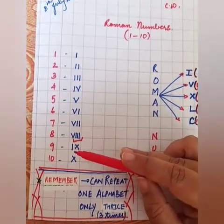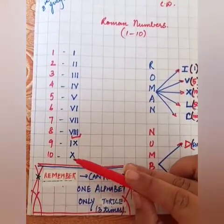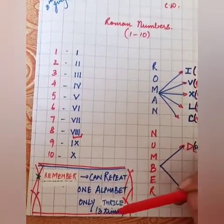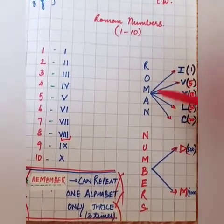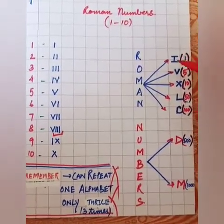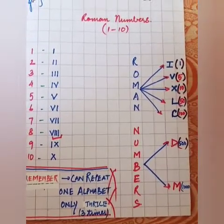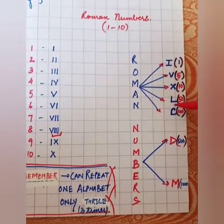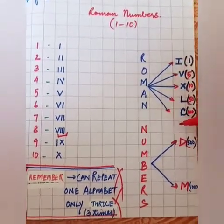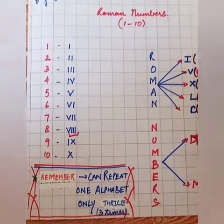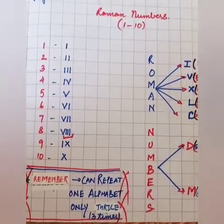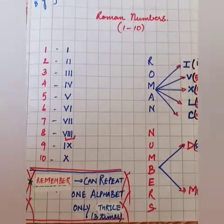To write 9, it is I and X (IX). To write 10, it is X. So remember, you can repeat one alphabet only thrice — 3 times. In Roman numerals, there are 7 letters to remember. For your level, we use 5 English letters: I for 1, V for 5, X for 10, L for 50, and C for 100. We also use D for 500 and M for 1000. There are more rules that we will do tomorrow.